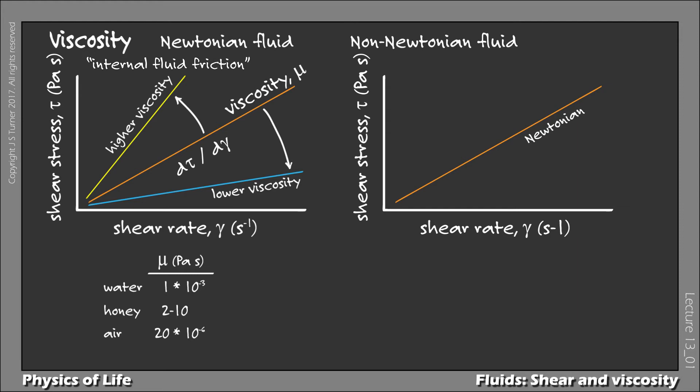A non-Newtonian fluid, by implication, does not have a constant viscosity over all shear rates. One type of non-Newtonian behavior is described as shear thinning. In this instance, the viscosity is high at low shear rates, as indicated by the steep slope at low shear rates, and lessens as the shear rate gets higher, again indicated by the shallowing slope at higher shear rates.